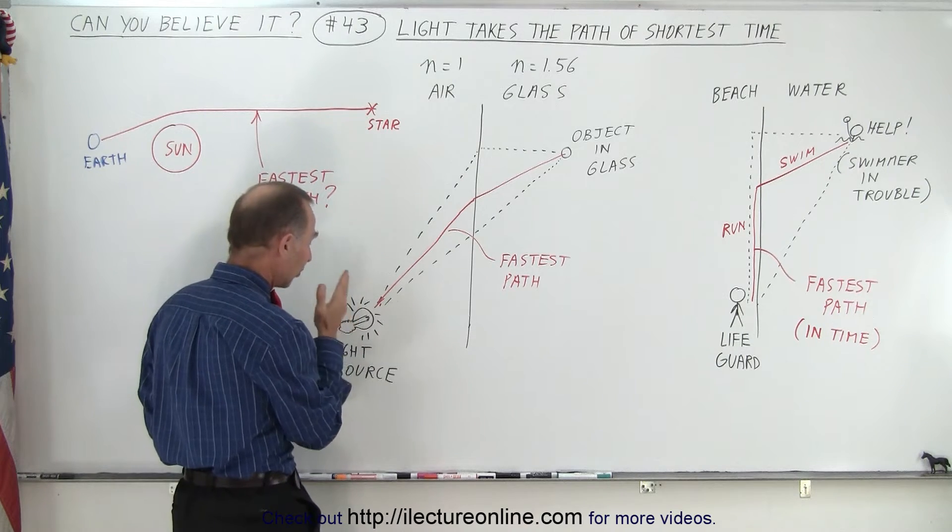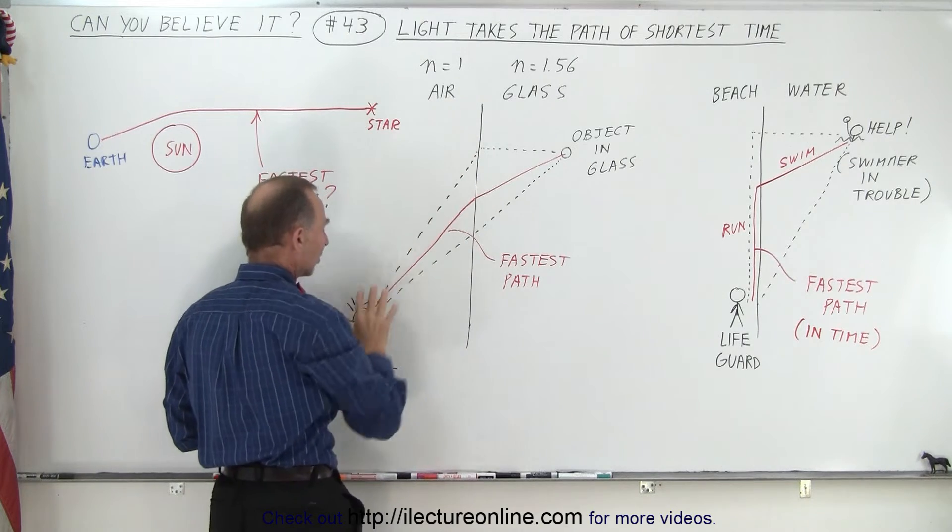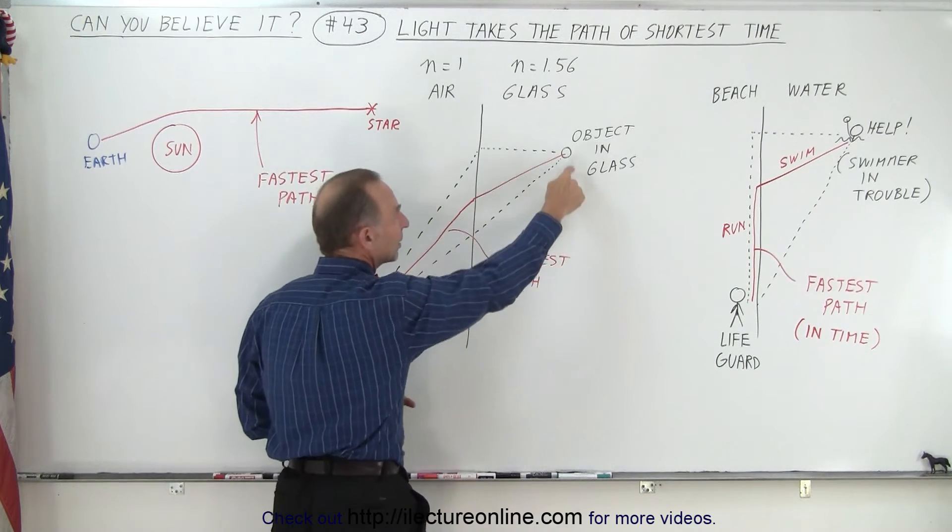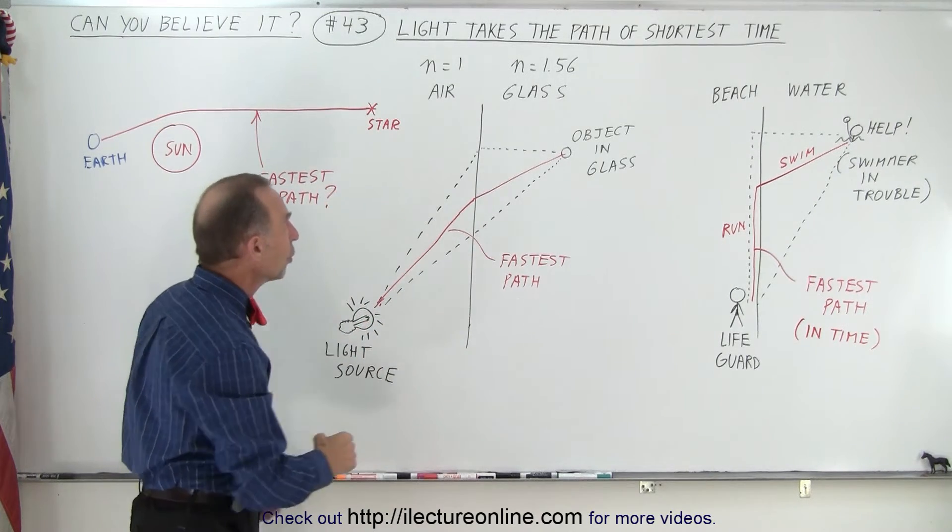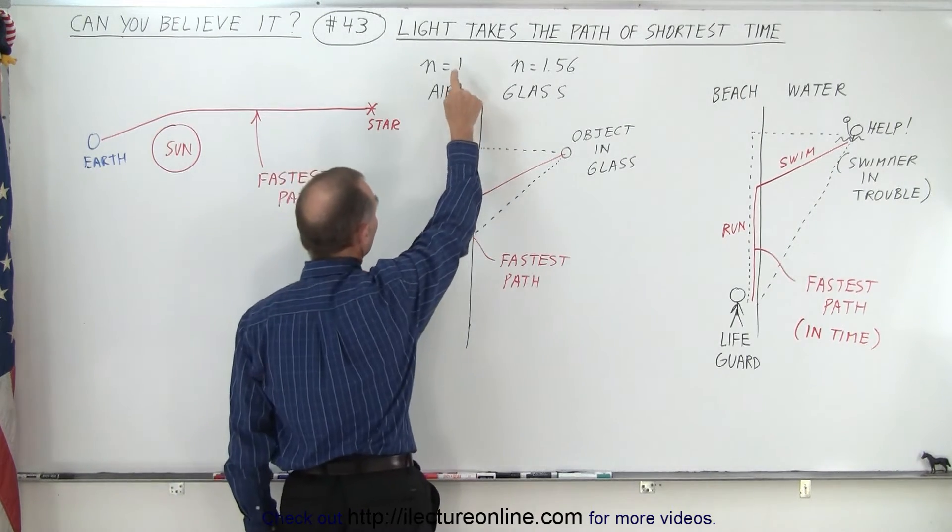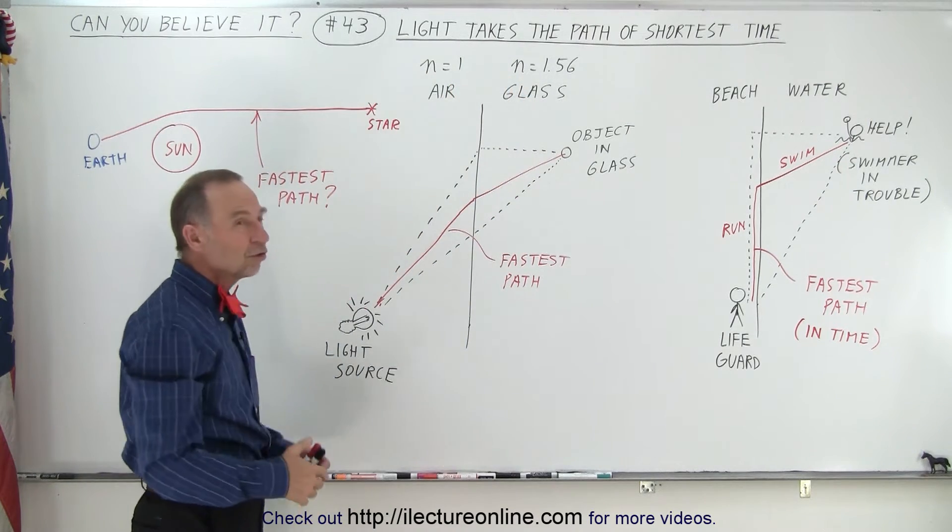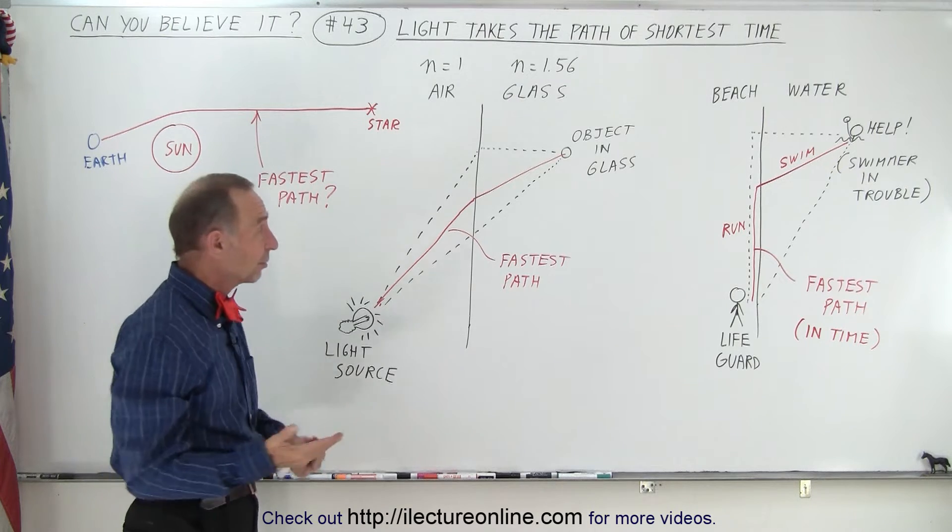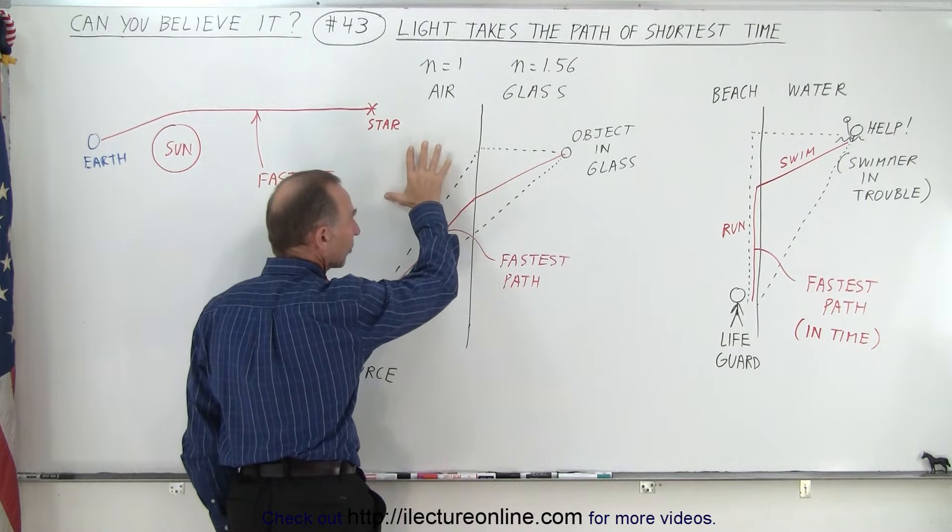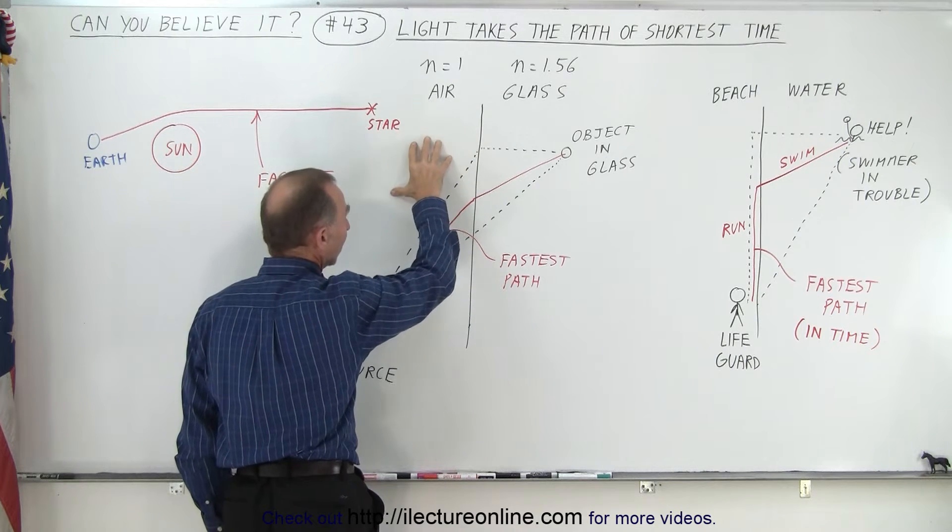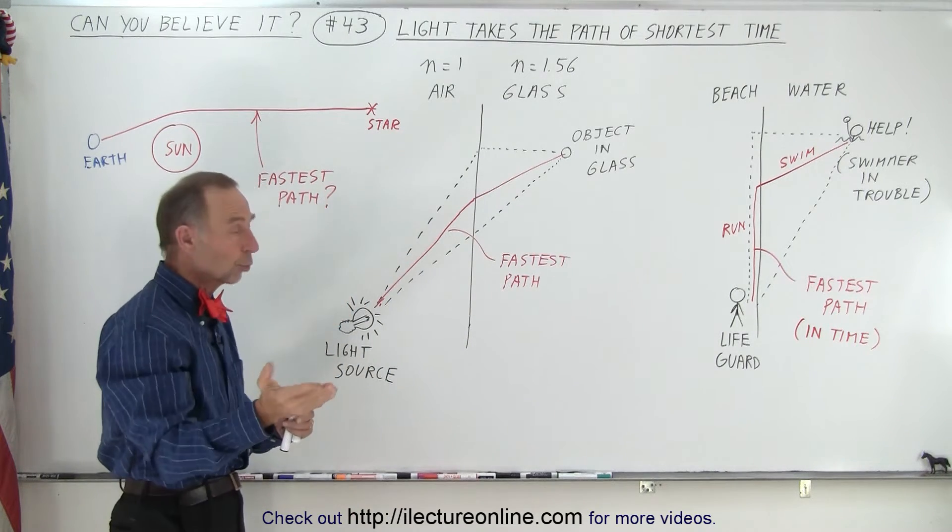Let's say you want to shine light from some source to a point in here, and let's say that on this side, the light is in the air, and on this side, the object you want to shine light on is inside a block of glass. Notice that the index of refraction for air is about 1, and for glass is about 1.56. As we know, when we study physics, we realize that when light crosses the boundary from one material that has an index of refraction that's different from another material, the light will bend either away or towards the normal.